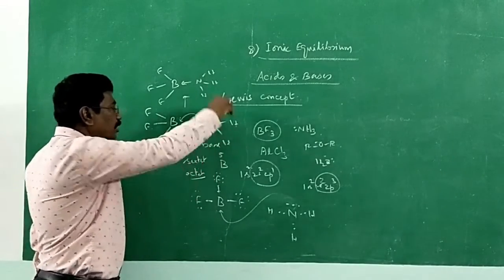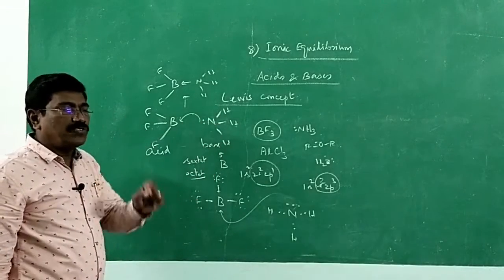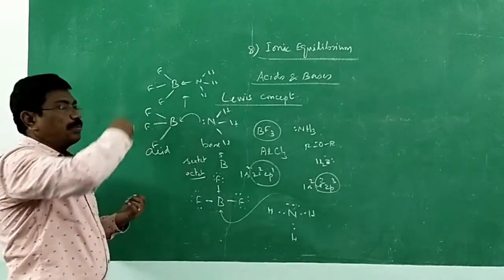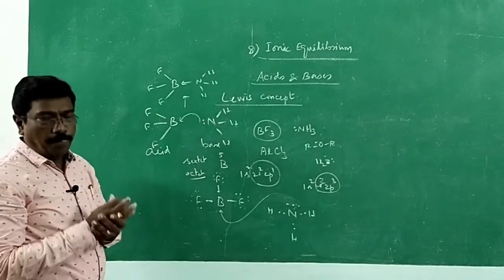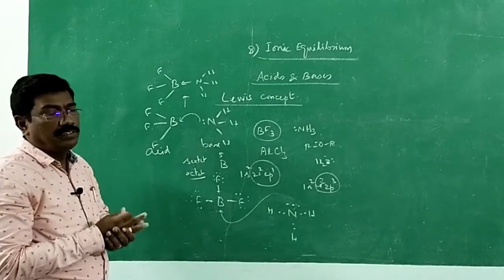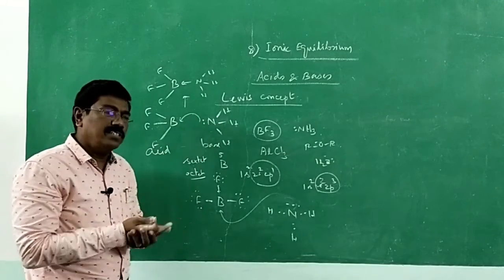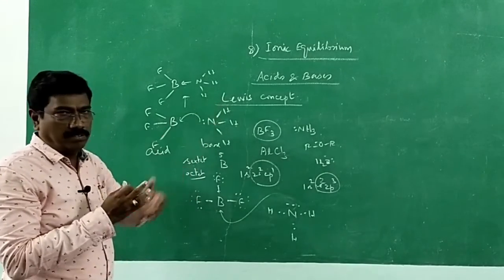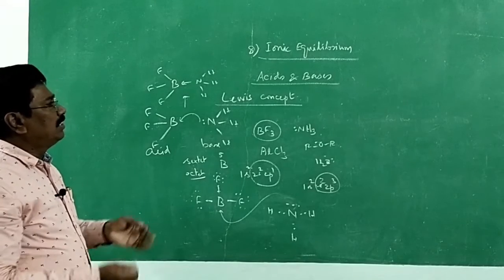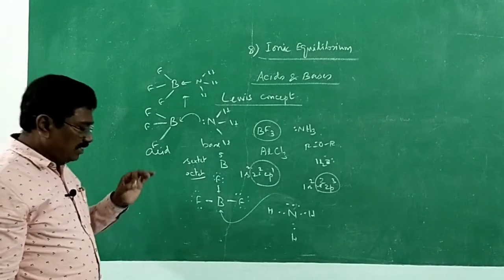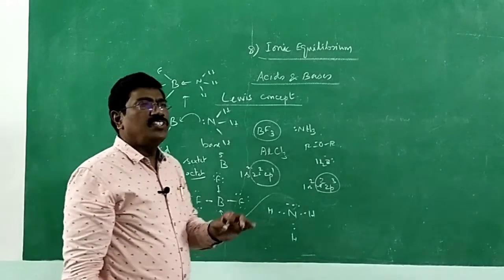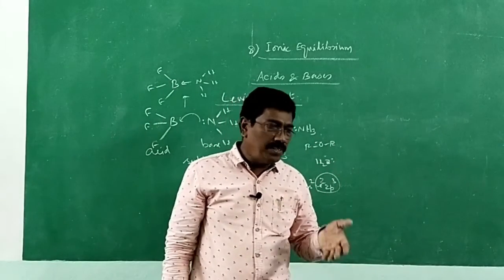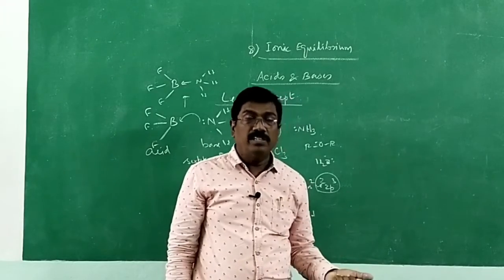BF₃ is said to be an acid; ammonia is said to be a base according to Lewis. Why? According to Lewis, acid is a substance which accepts an electron pair for the formation of a coordination bond; base is a substance which donates an electron pair for the formation of a coordination bond. Ammonia is a base — just as ammonium hydroxide is a base, it can give hydroxide. Very simple concept.